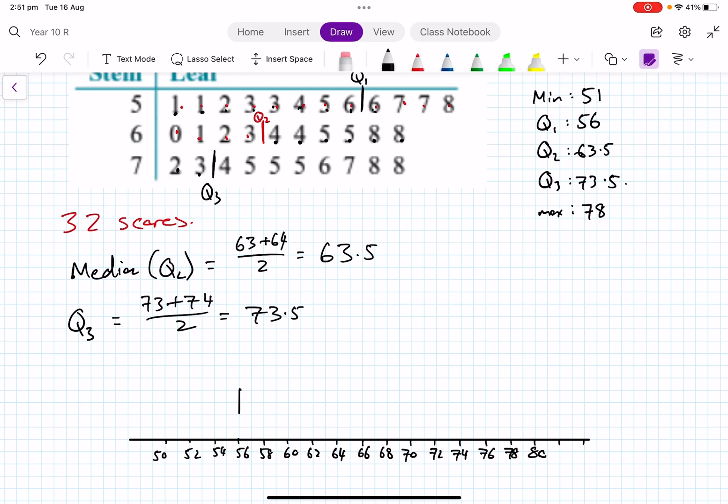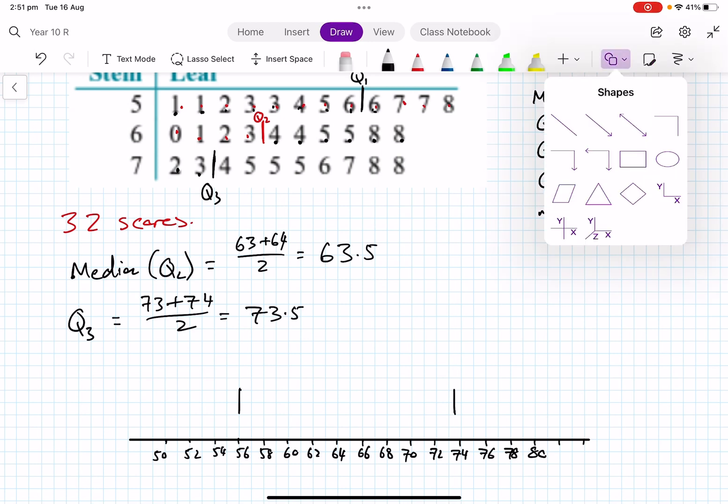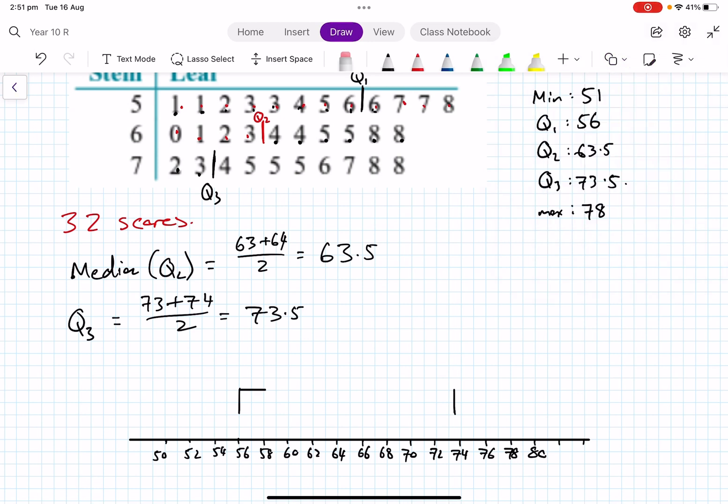So let me just do that. And then 73.5 is sort of, there's so many threes here and then 74, so it's gonna be halfway through. So it's going to be here.